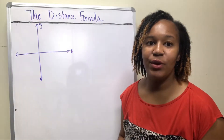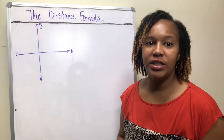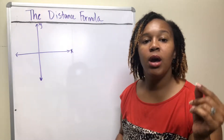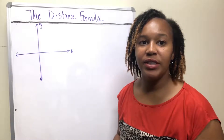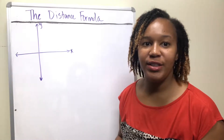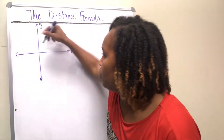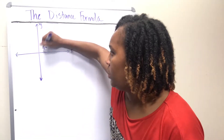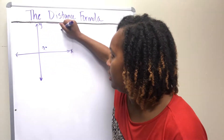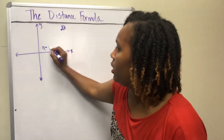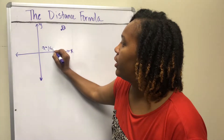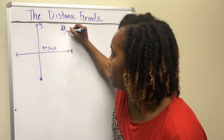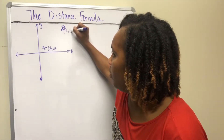The distance formula measures the distance between two points. Let's talk about how we get the distance formula first, and then I'll show you how to use it. Say you have two random points — I'll call this one P and this one Q, where P is (x1, y1) and Q is (x2, y2).